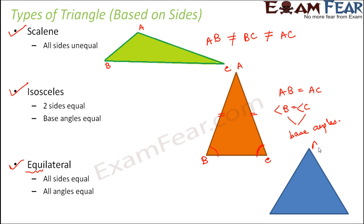So here if you have a triangle ABC, in this case AB is equal to AC is equal to BC. All sides are equal. All angles are also equal. That is angle A is equal to angle B is equal to angle C.